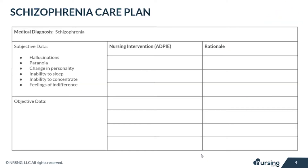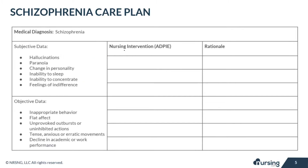Subjective data your patient with schizophrenia may experience includes hallucinations, paranoia, and a change in personality due to imbalances in the brain. In turn, these cause the patient to have difficulty sleeping and concentrating, which may create feelings of indifference.